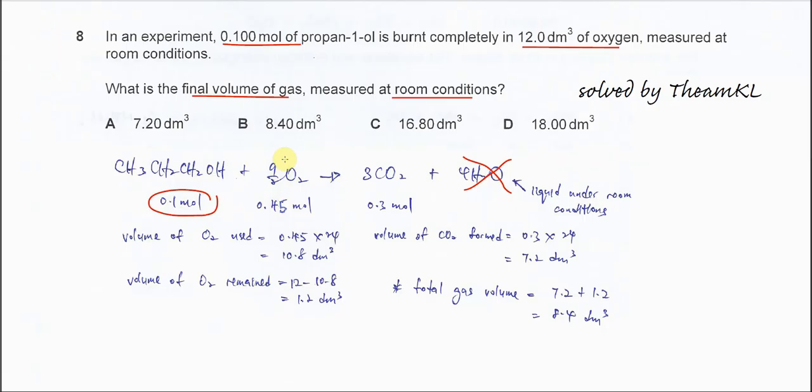Oxygen that needed is actually just 0.45. Because 1 mol will react with 4.5 mol of O2, therefore 0.1 mol of the propane-1-O will react with 0.45 mol of oxygen.